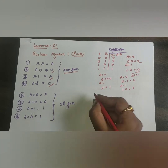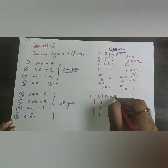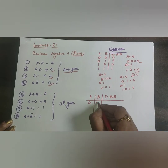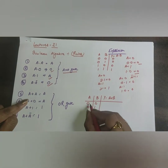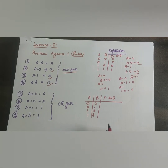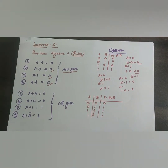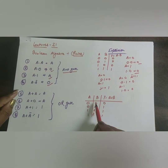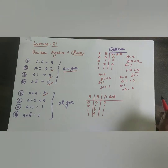Now the OR gate rule: inputs A and B, output is A+B, with four possible combinations. In an OR gate we get output if any input is 1. For A+A: 0+0=0 and 1+1=1, so A+A = A.